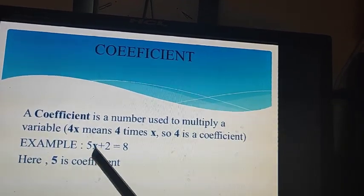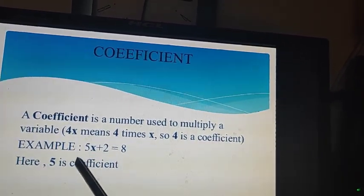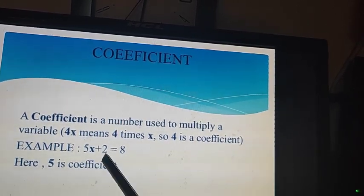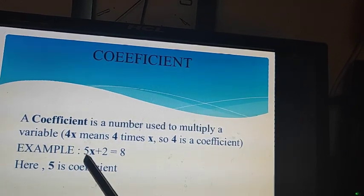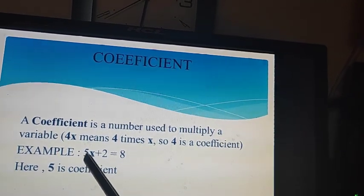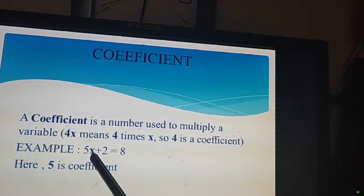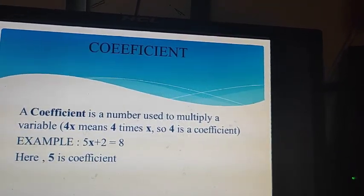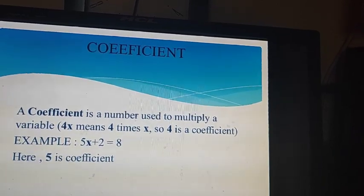For example, 5x + 2 = 8. Here 5 is coefficient, not constant. Here 2 and 8 are constants because they are numbers. But this 5 is a number multiplied with a variable, so now it is a coefficient, not a constant.